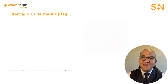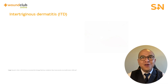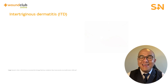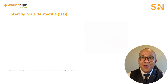The second type of MASD is intertriginous dermatitis — also known as intertrigo, which is the terminology I will use for the duration of the presentation.